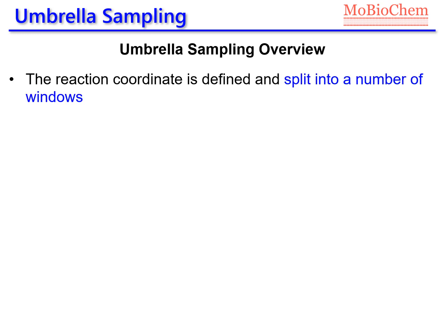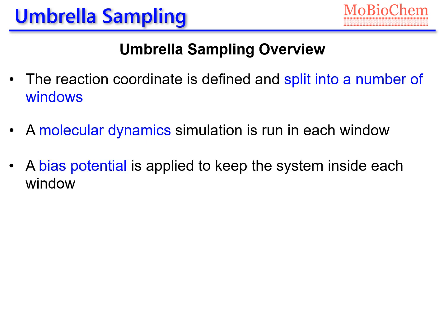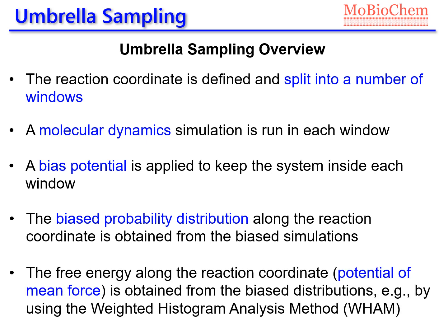In summary, to run an umbrella sampling simulation: first, define the reaction coordinate; second, split the reaction coordinate into a number of windows; third, run a conventional molecular dynamics simulation for each window, applying a harmonic bias potential to keep the system inside each window; fourth, compute the bias probability distribution for each window; and finally, compute the potential of mean force — the free energy along the reaction coordinate — from the bias distributions using, for example, the weighted histogram analysis method.